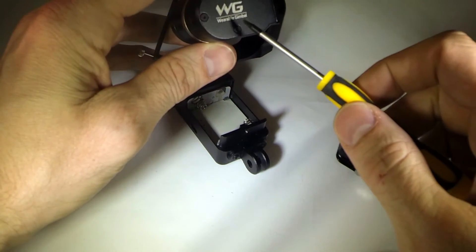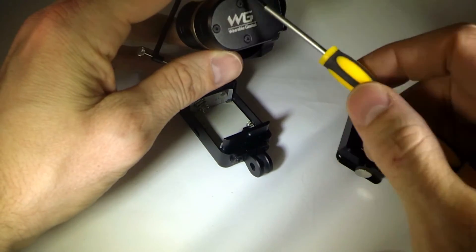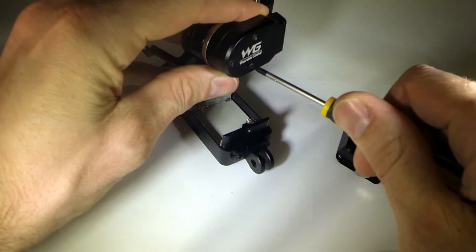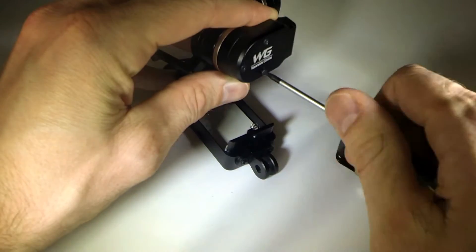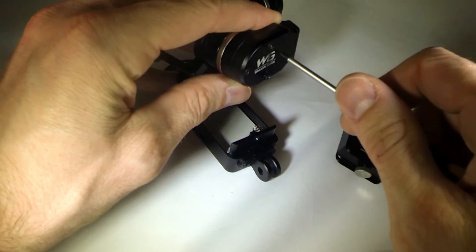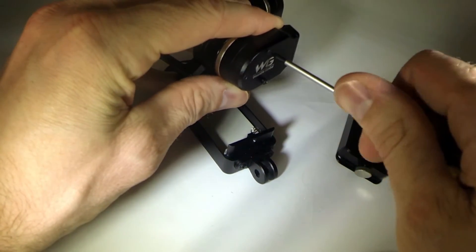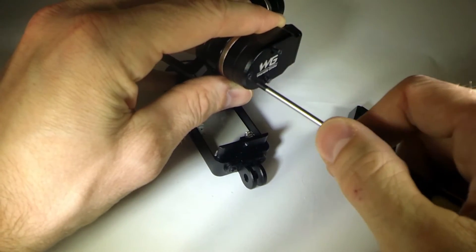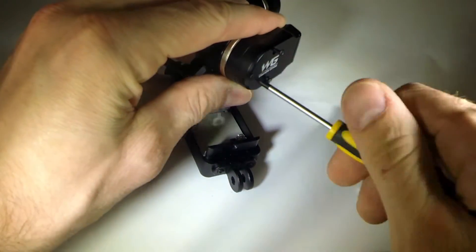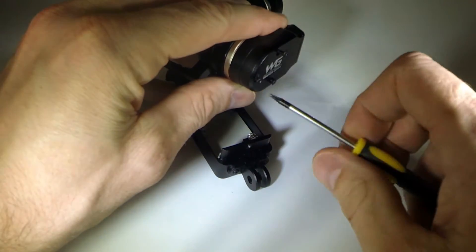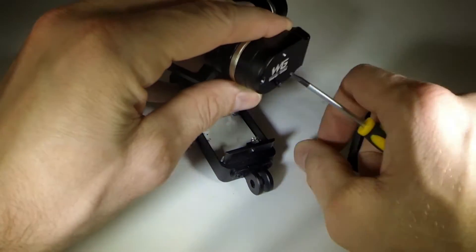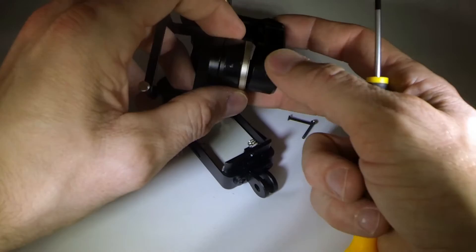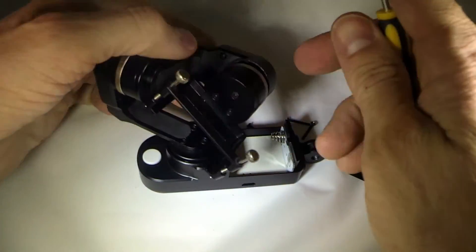The second step, remove these three screws here. Very simply, install your Allen wrench in there. They come out pretty easy. Set those aside.